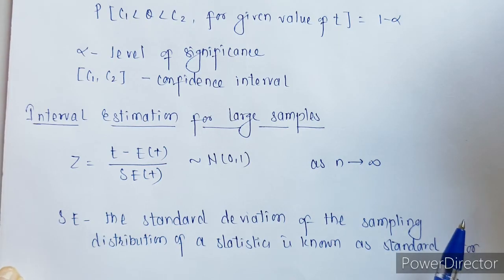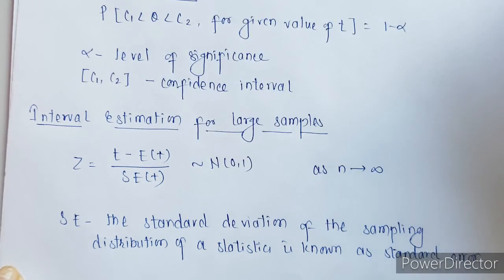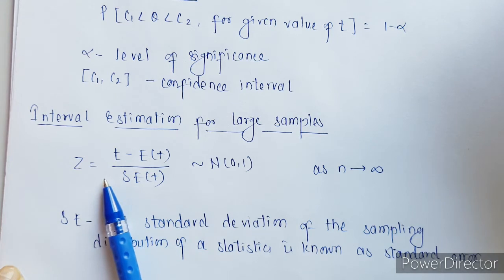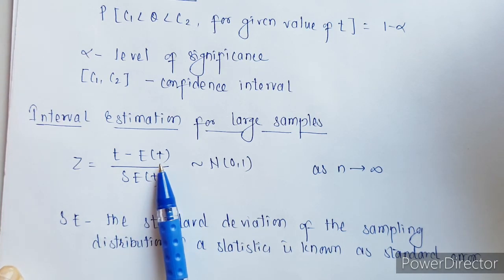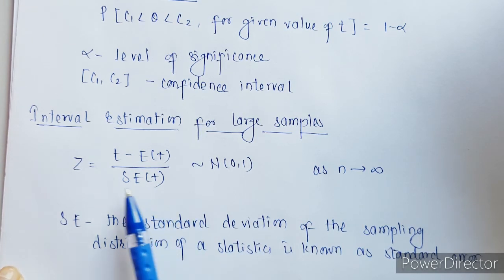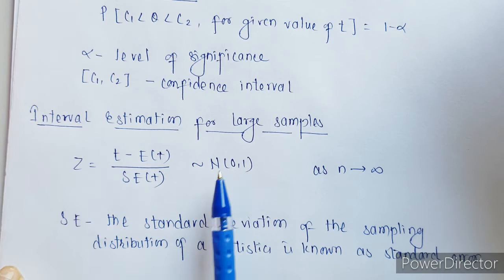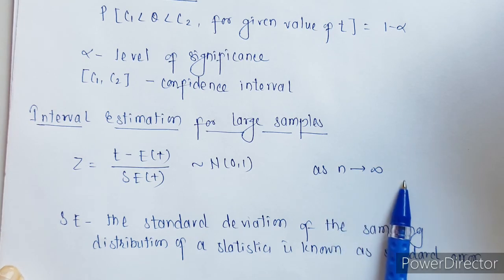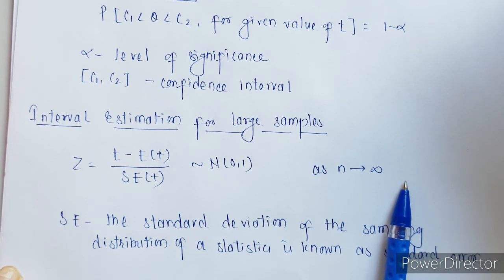Interval estimation for large samples. Now for large sample, the distribution of the standardized variate z corresponding to the statistical value t is asymptotically normal. So this standardized value is asymptotically normal whenever this n will go towards infinity, n is tending towards infinity.